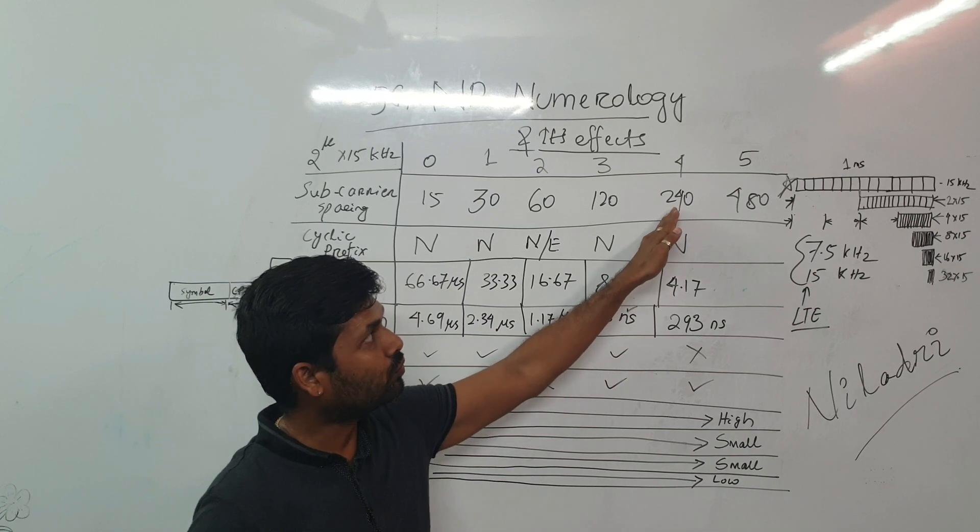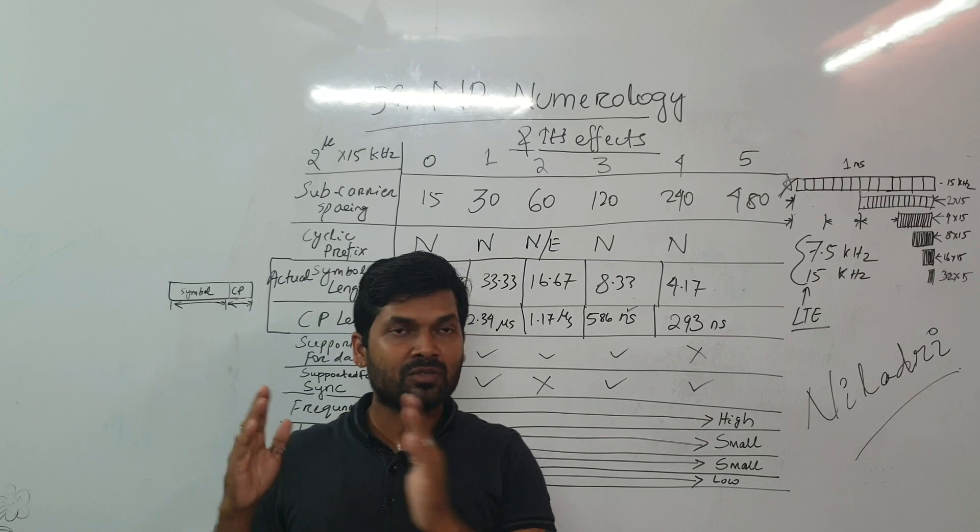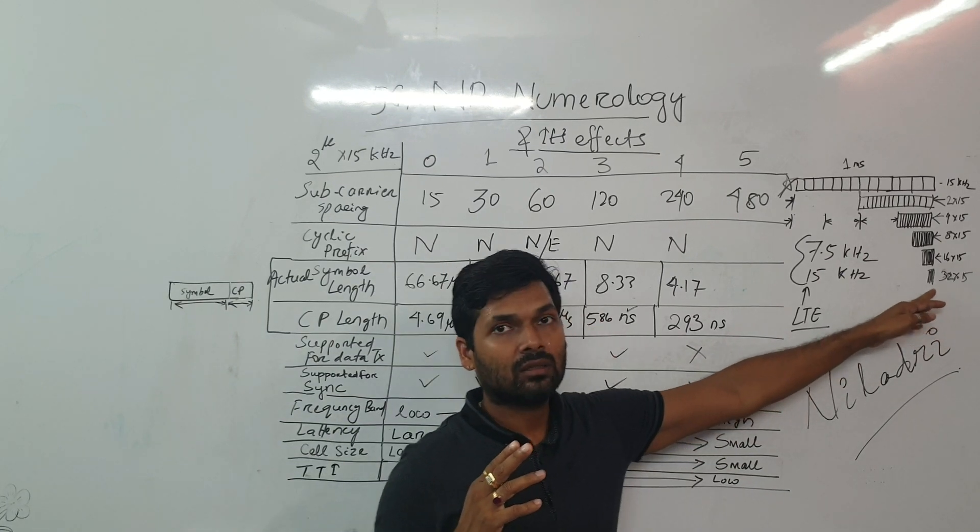Let's say 240, then we can transmit 32 different, 40 number of symbols, 32 into 15.